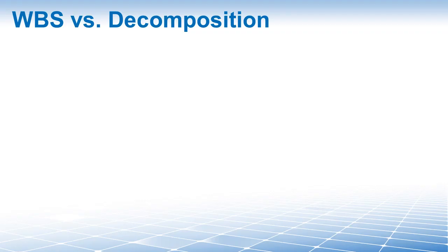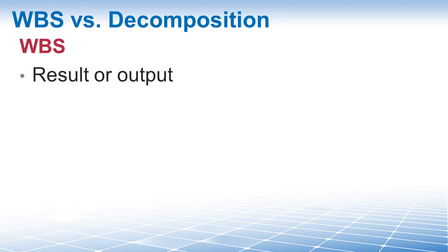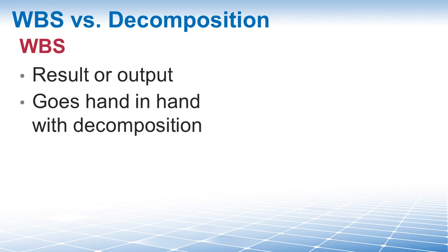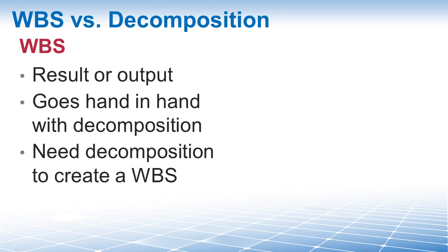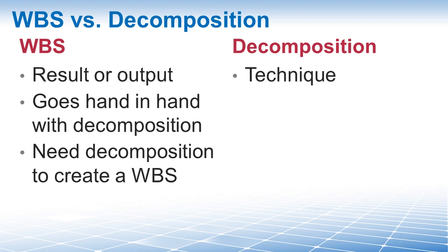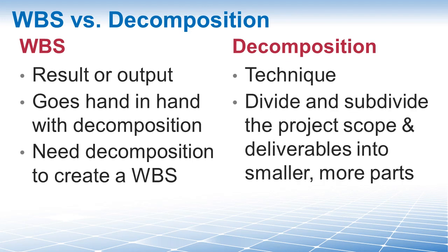One question I received from a student: what is the difference between the work breakdown structure and decomposition? The answer is actually quite simple. The WBS is a result — it is an output of the Create WBS process where you apply decomposition as the tool. Decomposition and the WBS go hand in hand because you need to perform decomposition in order to create a WBS. Decomposition is a technique — we use it to break down the work into smaller, more manageable components, and then we document the result as a WBS.